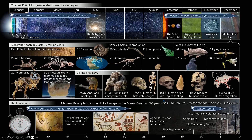It's worthwhile to revisit the cosmic calendar because we are well into December 31st now — out of the entire year. At dawn, apes and monkeys split. At 8 p.m., humans and chimpanzees split. Then at 10:30, human brain size begins tripling, and at 11:52, modern humans evolve. Let's see what happened in between, because these seem like very big jumps in a short time.